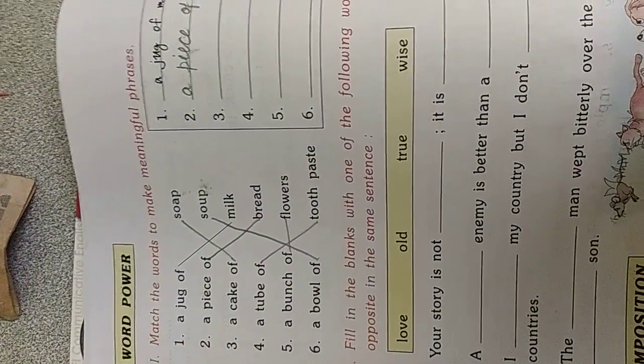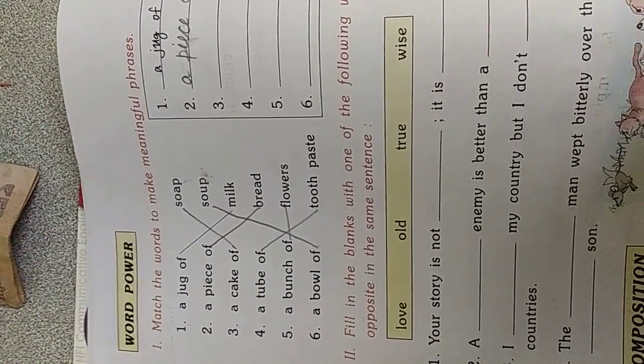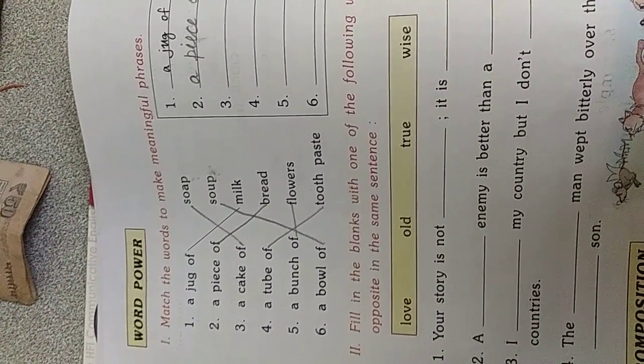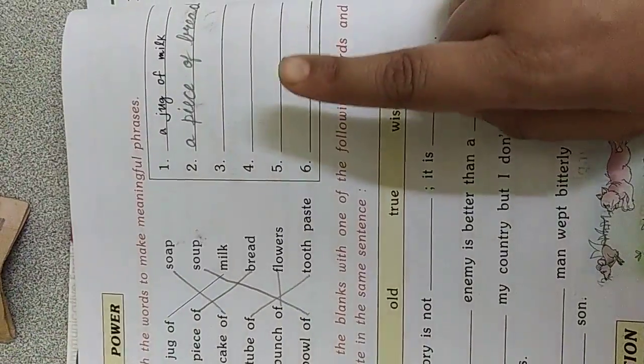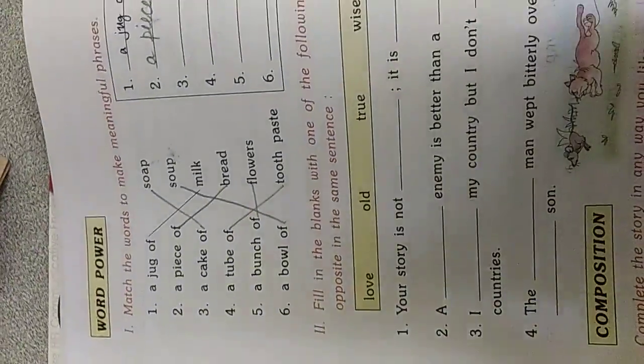A jug of milk, a piece of bread. Then third one is a cake of soap. Fourth one is a tube of toothpaste. Fifth one, a bunch of flowers. A bowl of soup. This you are going to complete as sentences. This is your today's homework.